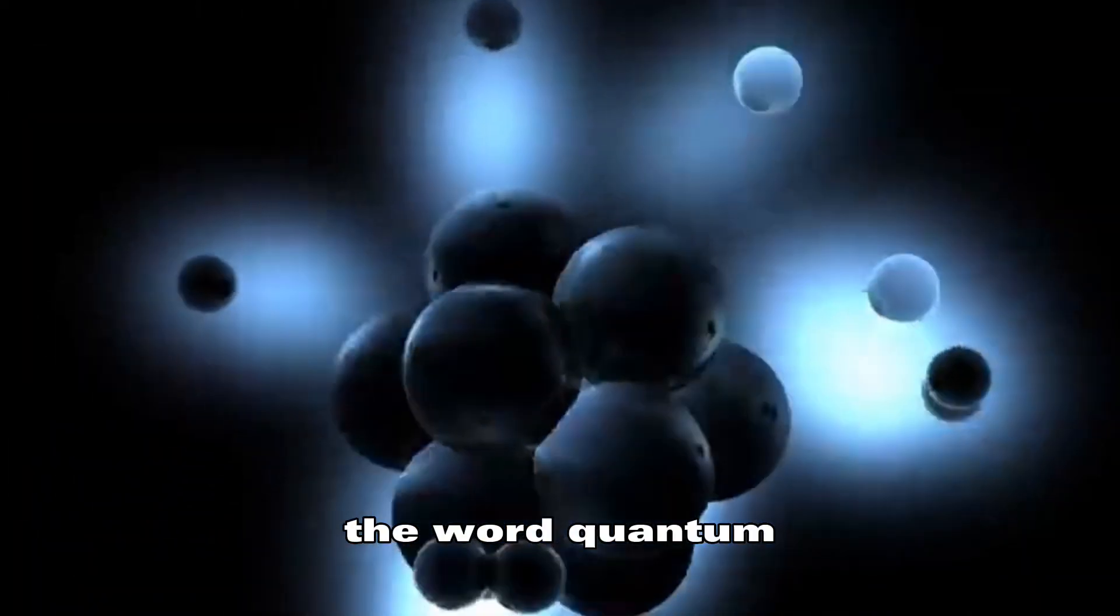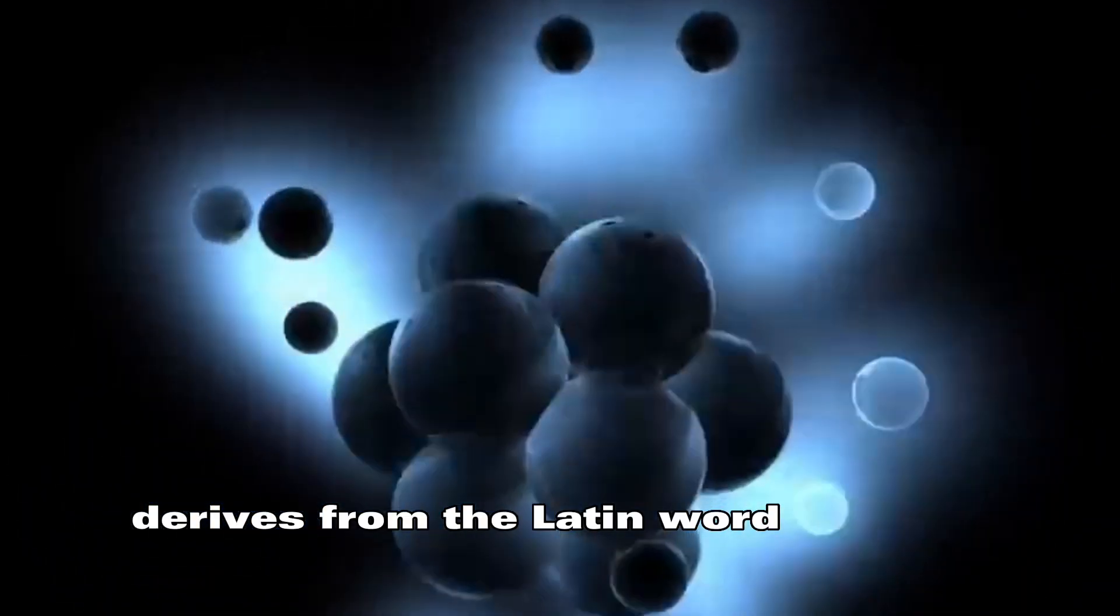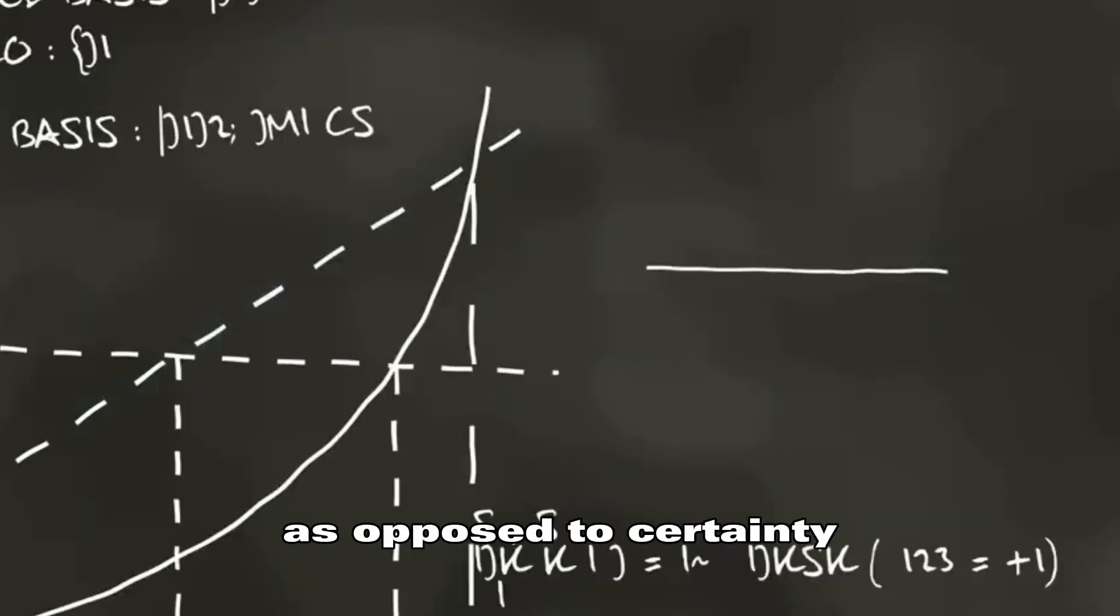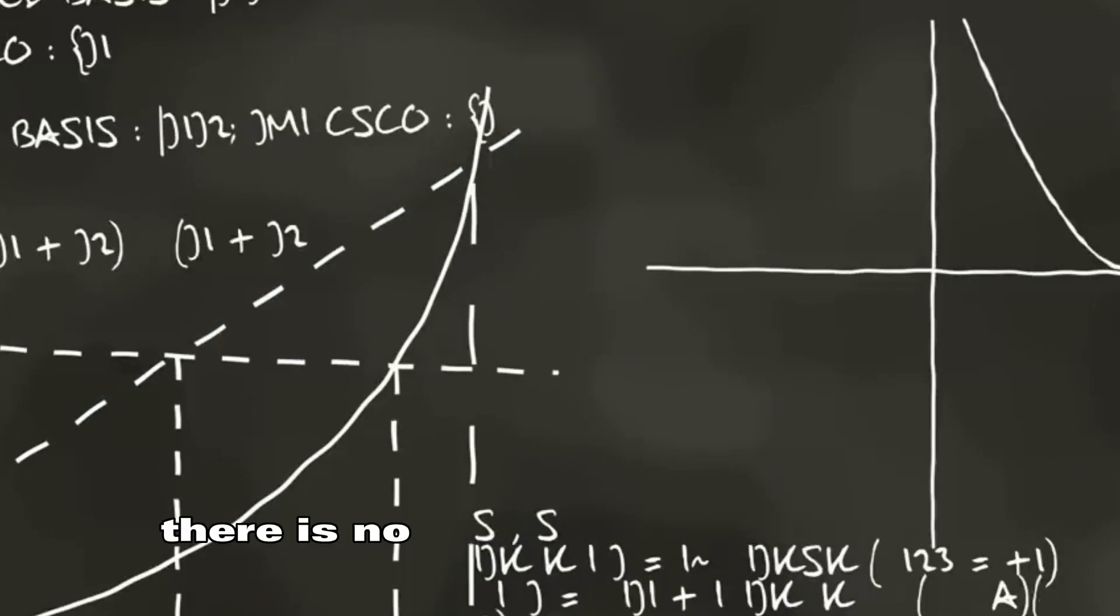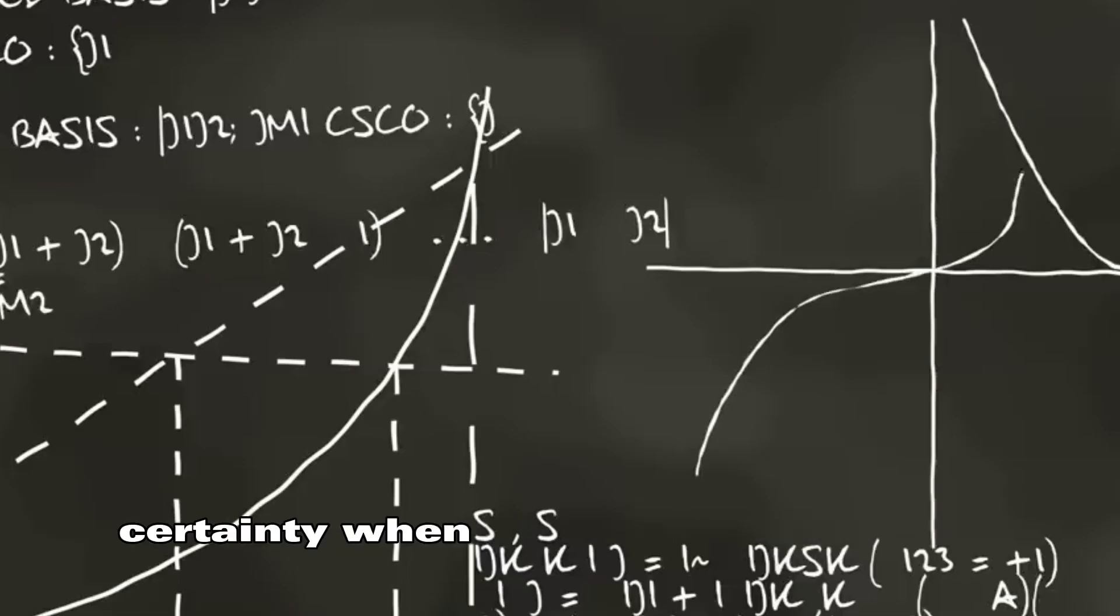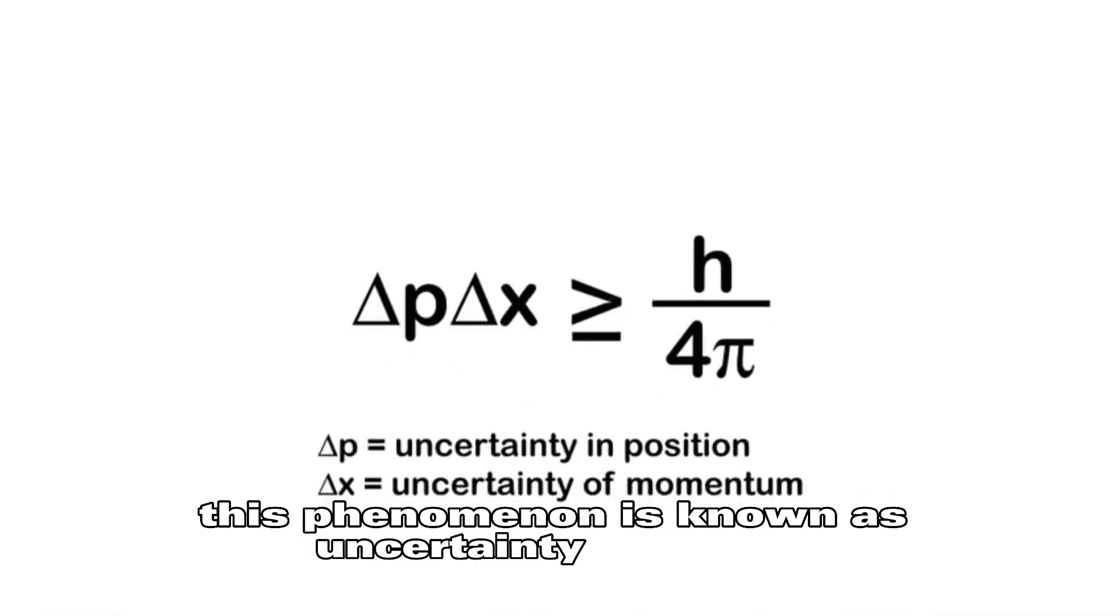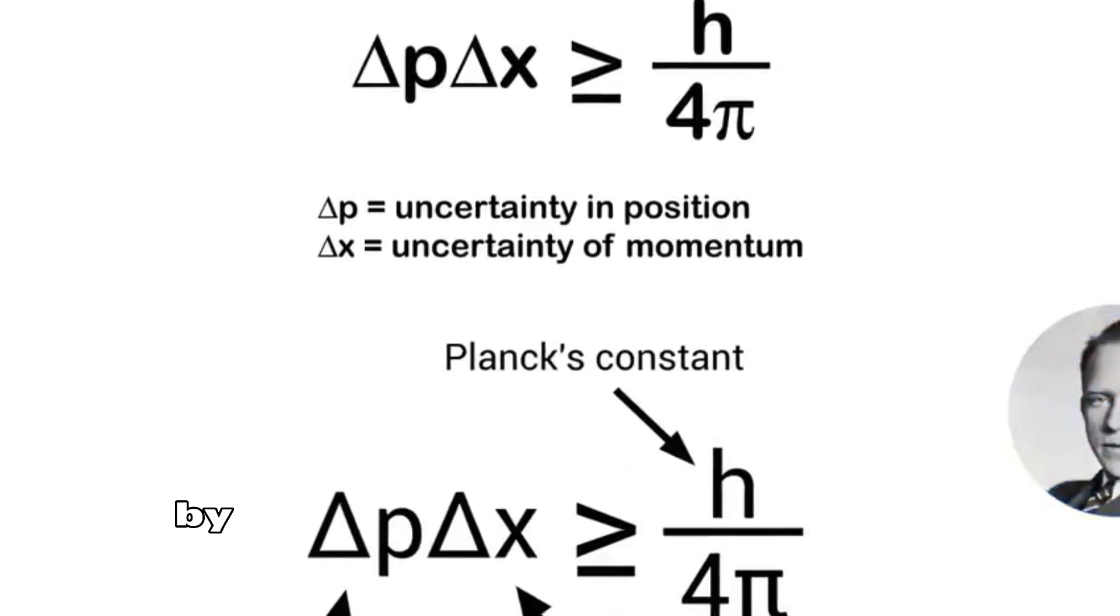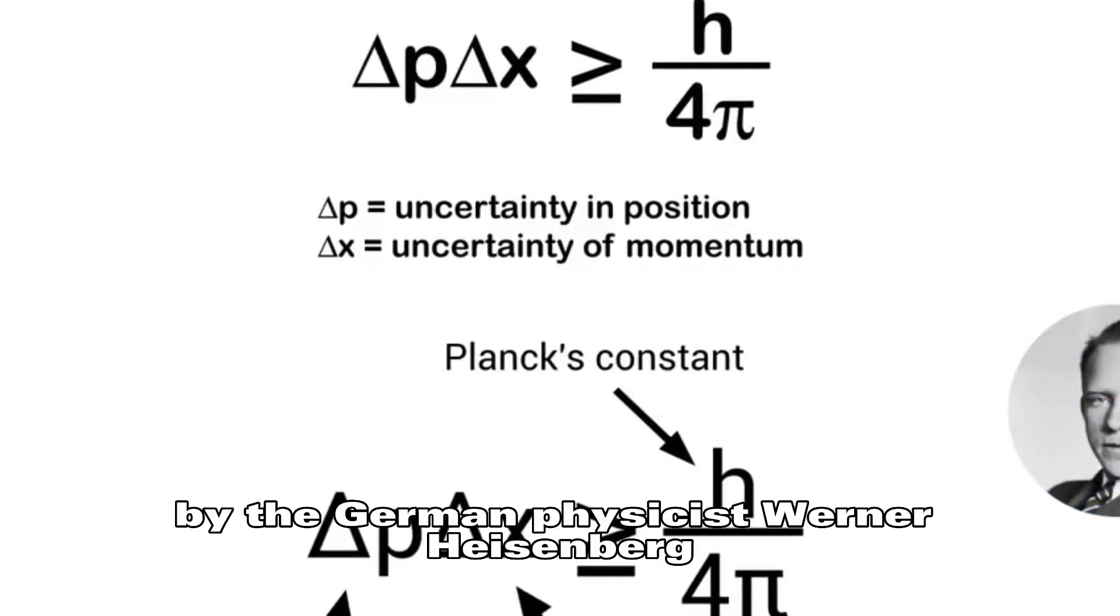The word quantum derives from the Latin word for how much. In a nutshell, it looks at objects in terms of probability as opposed to certainty. In quantum mechanics, there is no such thing as absolute certainty when looking for something. This phenomenon is known as the uncertainty principle and was introduced first in 1927 by the German physicist Werner Heisenberg.